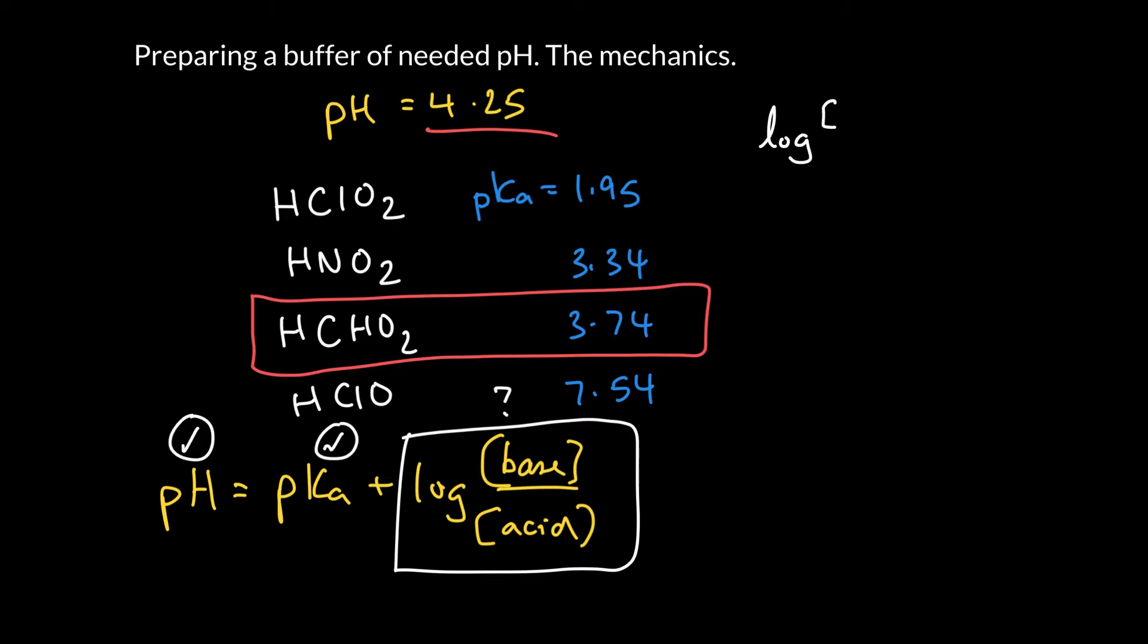So we can say the log of the base to acid ratio in our buffer is going to be pH minus pKa. So in our problem here the desired pH was 4.25. Our pKa that we think will work the best is 3.74. And so if we go ahead and we subtract we can see that is exactly 0.51. So the log of the base to acid ratio is 0.51.